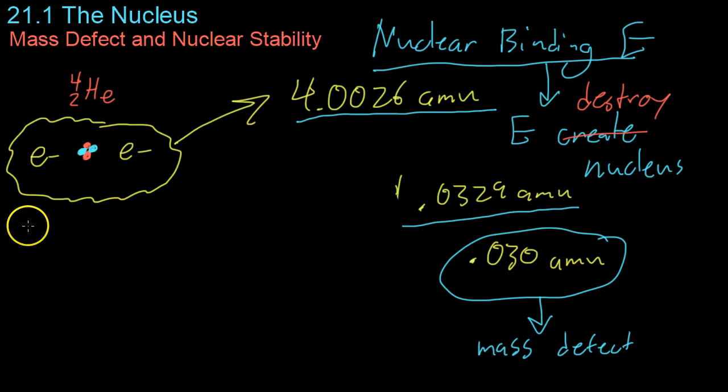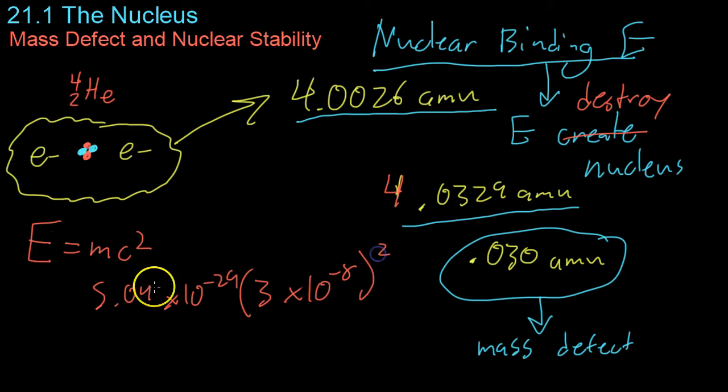And it's really easy to determine the nuclear binding energy from the mass defect based on Einstein's equation, that I'm sure you've all seen before, E equals mc squared. Now, you just take the total mass defect, in this case, 0.030 amu, oh, that should be a 4 right there, 0.030 amu, which is approximately 5.04 times 10 to the negative 29 kilograms, multiply by the speed of light, which is 3 times 10 to the 8 meters per second, square that, and you get a total binding energy of 4.54 times 10 to the negative 12 joules.